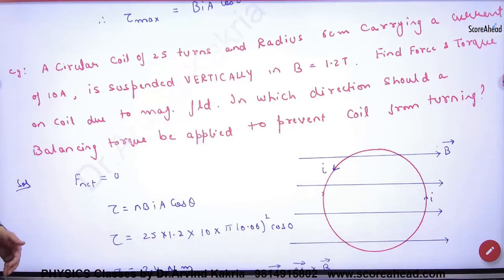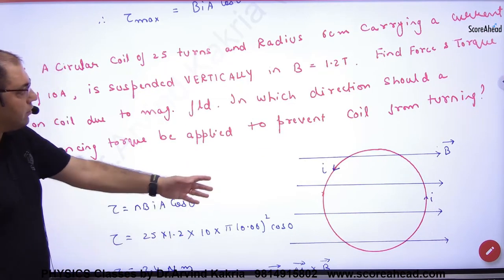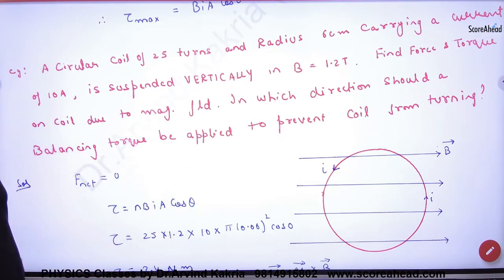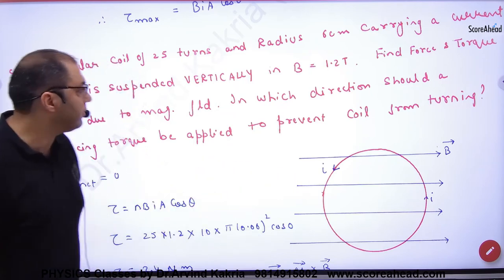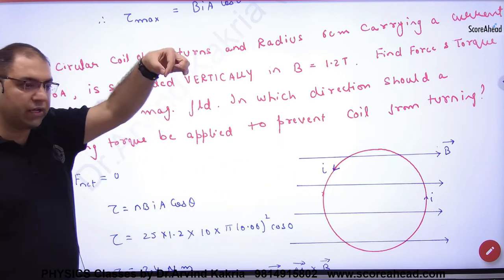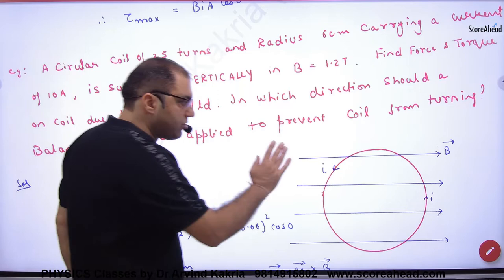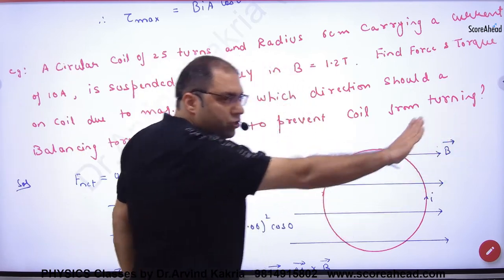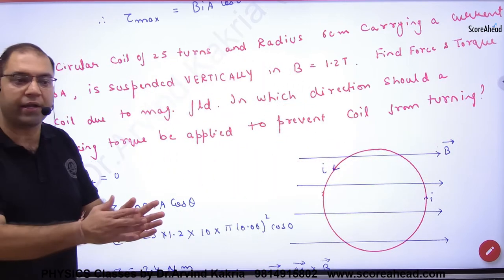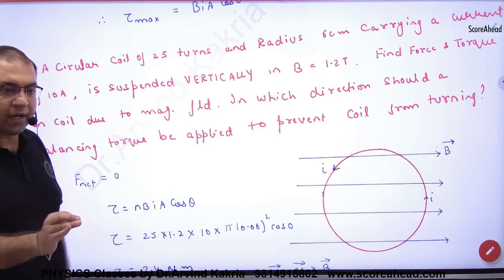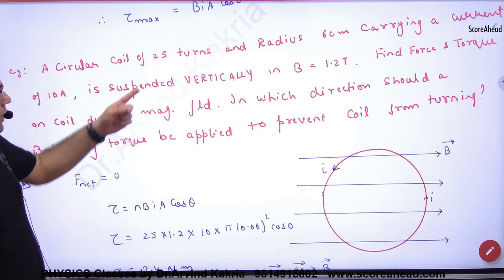Circular coil of 25 turns, radius is 6 cm, carrying current of 10 ampere. Suspended vertically such that this loop is lying in the direction of the magnetic field. So what will be theta in it? Zero. What will be torque? Maximum.